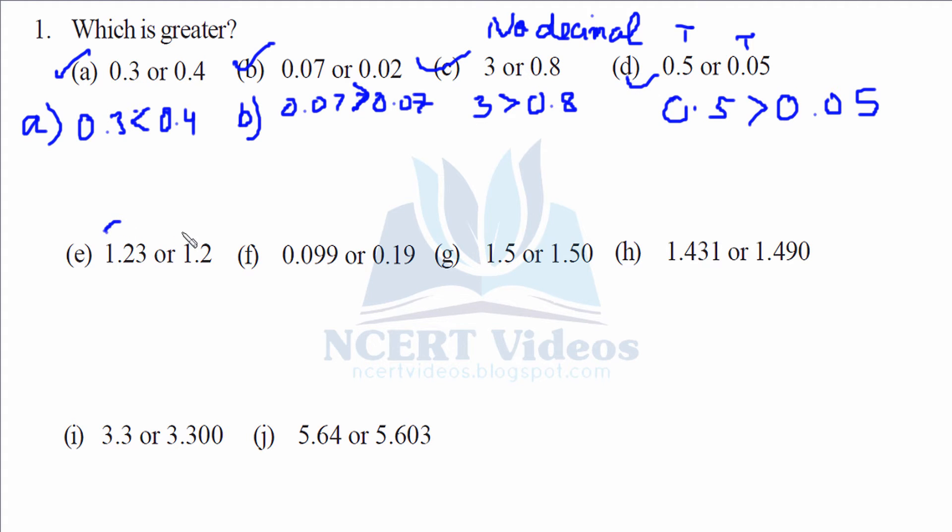Part e: we have tenths the same—2, ones the same—1. But here, look: 3 is greater than here where we have 0, where nothing is written. Let it be zero. 1.23 is greater than 1.2. And don't pronounce it one point twenty-three.